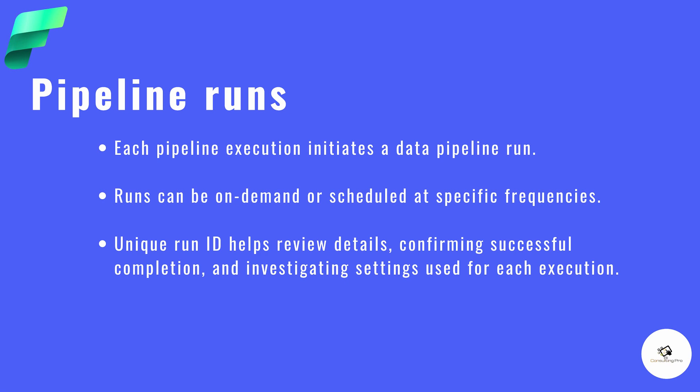Pipeline runs help you execute all the different activities embedded inside a pipeline. These can be on-demand or scheduled runs, and a unique ID is associated with each run so you can check whether your pipeline has run and verify its status.